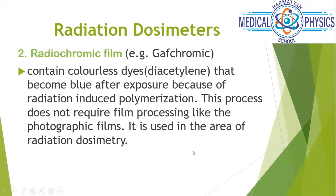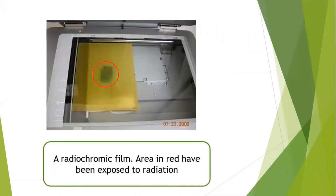The next dosimeter type is the radiochromic film — also called Gafchromic film. They contain a colorless dye that becomes blue after exposure because of radiation-induced polymerization. This process does not require film processing like other photographic films. It is used in the area of radiation dosimetry — we use them quite extensively in radiotherapy. The film appears yellowish in color and you can see the blue areas where radiation exposure has occurred. We use a scanner to process results in this case.